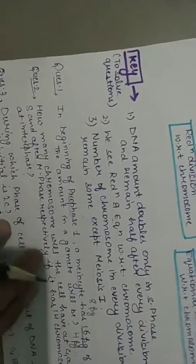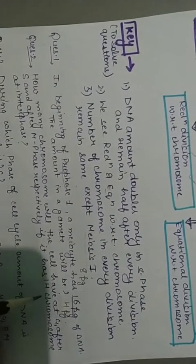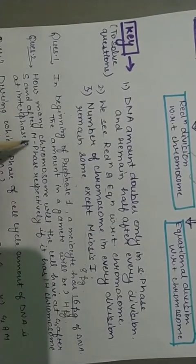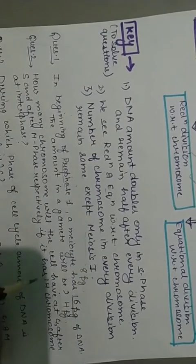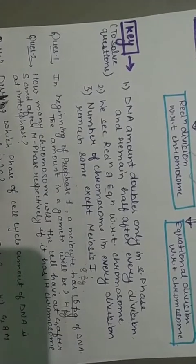How many chromosomes will the cell have at G after S and after M phase respectively if it has 14 chromosomes at interphase?